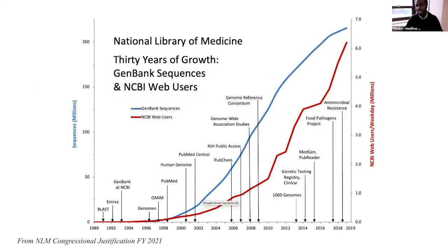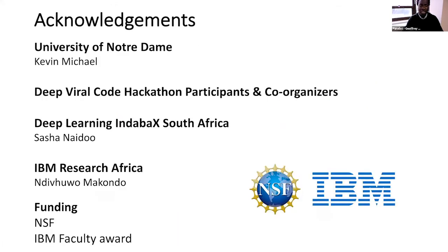For the last 30 or so years, the National Library of Medicine has created wonderful resources allowing sharing of vast amounts of genomic data and biomedical literature. To harness the full power of these resources, natural language processing is needed. Because these resources are freely accessible, it's an opportunity for everyone in the world, including Africa where there may be a lack of datasets, to contribute to the advancement of biomedical research. Thank you to my student Kevin Michael at University of Notre Dame, collaborators at IBM Research Africa, and funding from the National Science Foundation and an IBM faculty award.